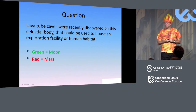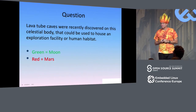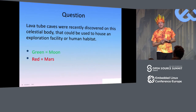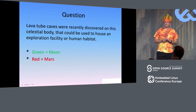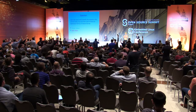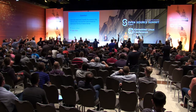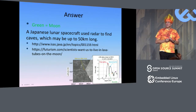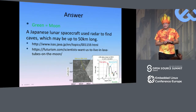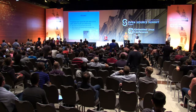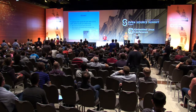Lava tube caves were recently discovered on this celestial body that could be used to house an exploration facility or a habitat. Was that the moon or Mars? It was the moon. If you are red, please sit down. A Japanese spacecraft found some places we could put a moon base — pretty cool.